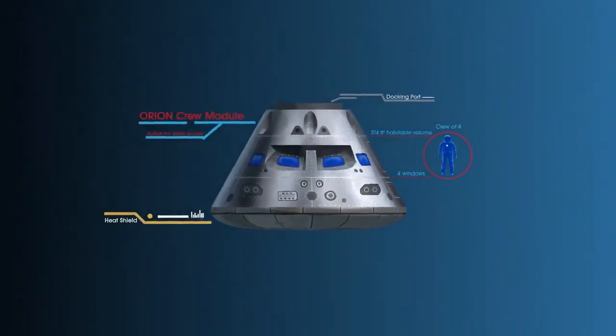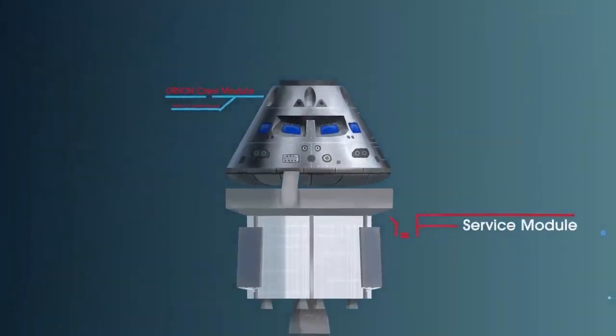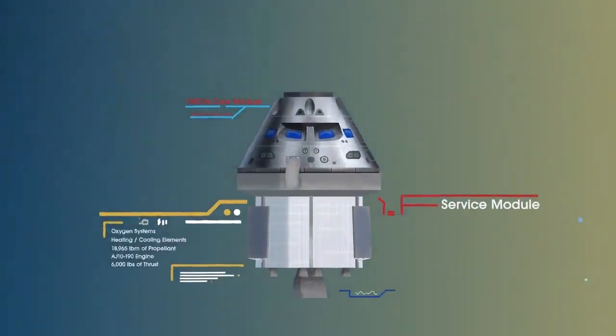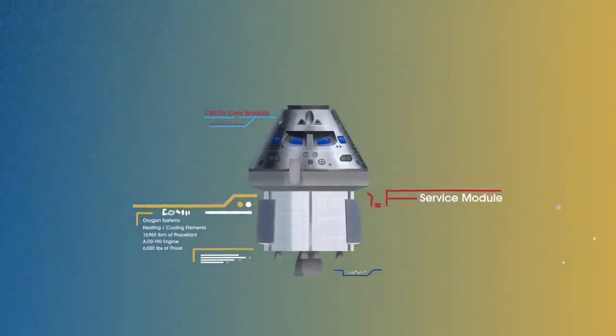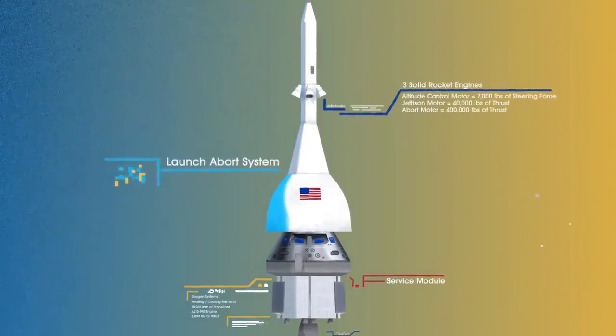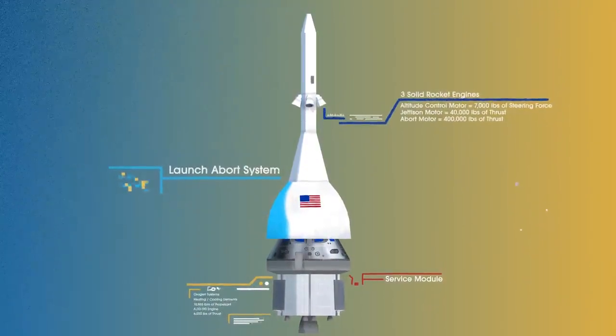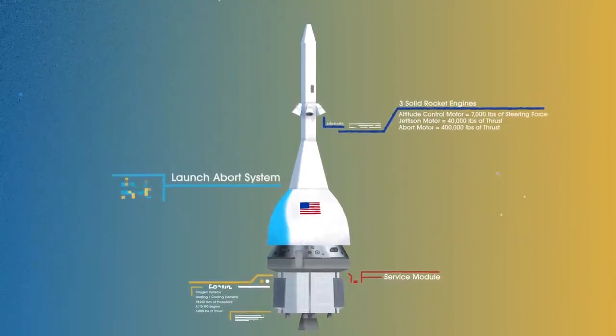The crew module, where up to four astronauts will live and work throughout the flight. The service module, with life-support systems for the crew and its own engine and fuel reserves, and a launch abort system, with engines capable of pulling the crew module to safety during launch should anything go wrong.